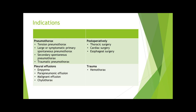Chest tubes are inserted for this purpose. The common indications for chest tube placement are shown in the table. The goal is to evacuate air or fluid from the pleural space, thereby allowing the lung to re-expand. Relative contraindications for chest tube placement include uncorrected coagulopathy.